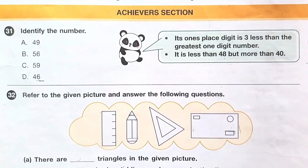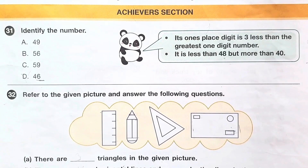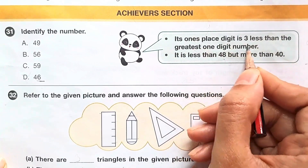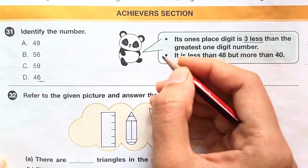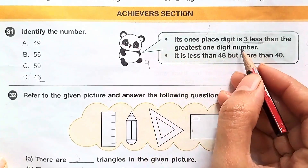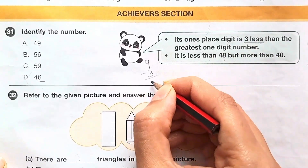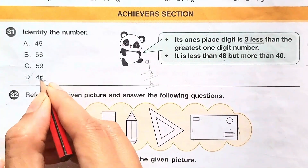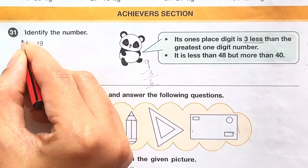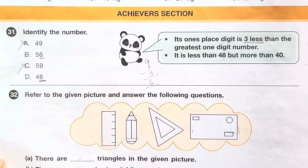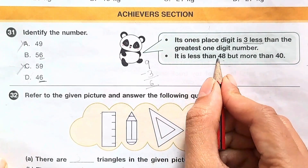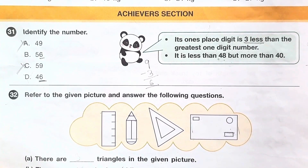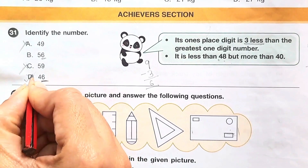Coming to the Achieva section. Question number 31: identify the number. Its ones place digit is 3 less than the greatest one-digit number, which is 9. So 9 minus 3 equals 6 — its ones place is 6. The number is less than 48 but more than 40, so the answer is option D: 46.